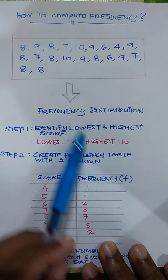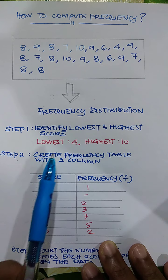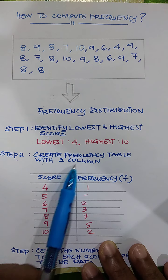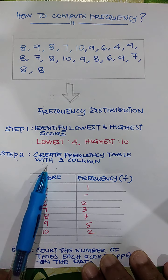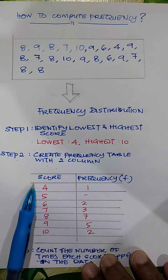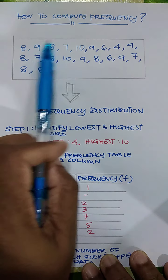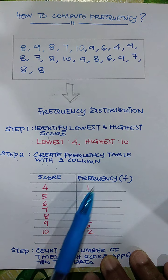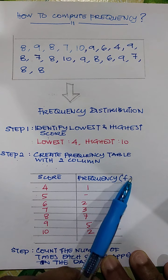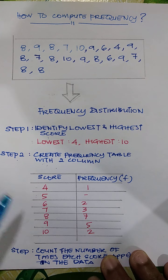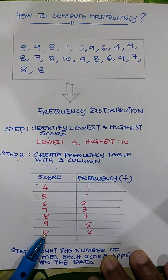So step two is to create a frequency table with two columns. Column one, column two. The first column lists all the scores that we have obtained from our data, from our information. The second column represents the frequency and it is represented with small letter f. So what we need to do is, since we know what is the lowest and we have the